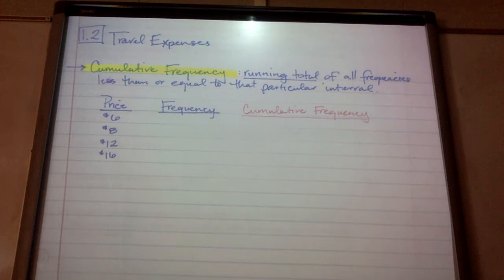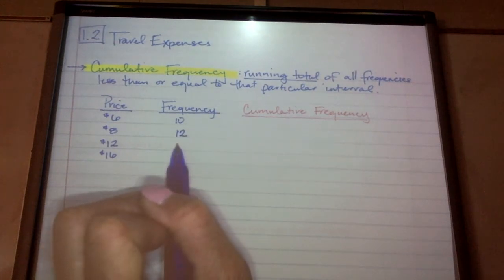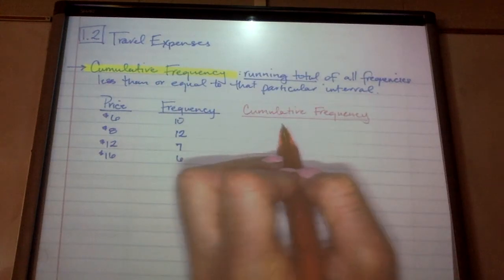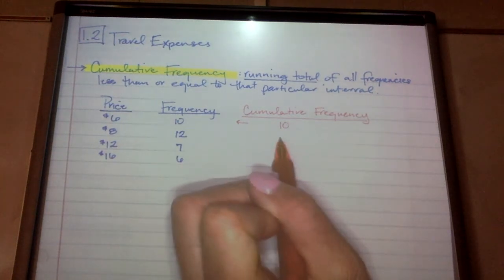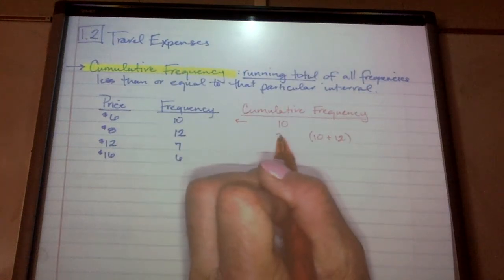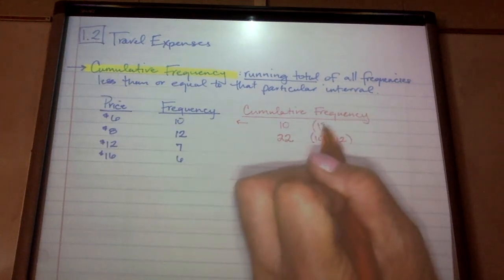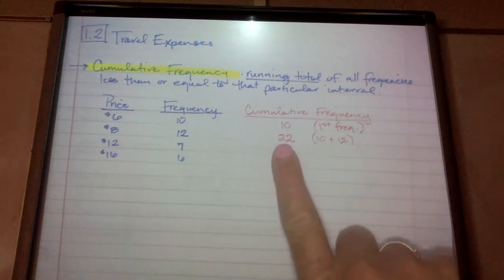Frequency would be like the number of people that purchased that item. So let's say 10 people purchased a $6 plant, 12 people purchased $8, 7, 6. So frequency is the amount of that item that occurred. Cumulative frequency gives you a running total. So for this column, I'm always going to start with my first piece of data, which is 10. And then moving down, I'm going to add. So in this next line, I'm adding the previous one with the current one, which is 12. So 10 plus 12, I now have a total of 22 items purchased.